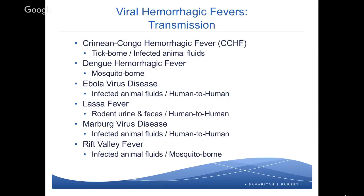Starting off, we're going to look at Crimean-Congo hemorrhagic fever, or CCHF. This is a tick-borne disease that can also be transmitted through infected animal fluids. It's endemic to Africa, the Balkans, the Middle East, and Asia. Then we have dengue — many of you are familiar with dengue if you've worked abroad. A more severe form can turn into a hemorrhagic fever. Dengue itself is mosquito-borne and is well known throughout the tropical and subtropical world; severe dengue is generally seen in Asian and Latin countries. All of this information is from the WHO website — if you Google 'viral hemorrhagic fevers' they have a great overview. There's also an open-source WHO online training center, and there is a training available for CCHF as well as Lassa fever.